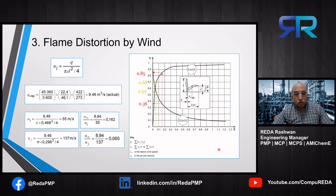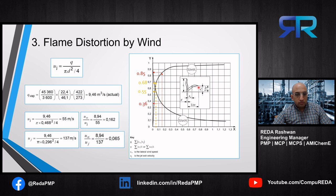To account for flame distortion by wind, we use a graph to determine where our flame will be after bending due to the wind. We enter the graph with the ratio between wind velocity and gas velocity, then hit one curve to get ΔX/L and the other curve to get ΔY/L. We have just determined L from the previous step equals 50 meters. The wind velocity equals 8.94, and we need to calculate the gas velocity — done twice, once for 0.2 Mach and once for 0.5 Mach.